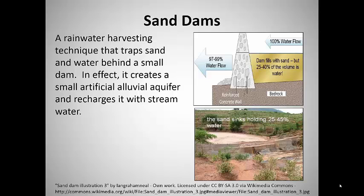Sand dams could be considered a type of rainwater harvesting technique that creates miniature alluvial aquifers for storage of storm runoff. A small dam is built across a river that tends to carry heavy loads of sand. Both sand and water are captured behind the dam. The captured sand typically contains 25 to 40 percent water by volume, which can be tapped using a simple well. According to the Africa Sand Dam Foundation, a dam like this one in Kenya can provide a year-round supply of water for up to a thousand people.